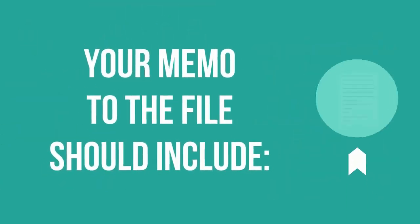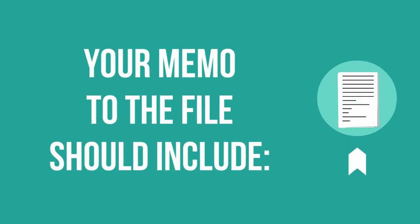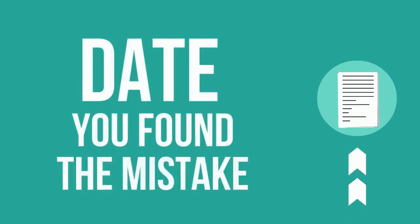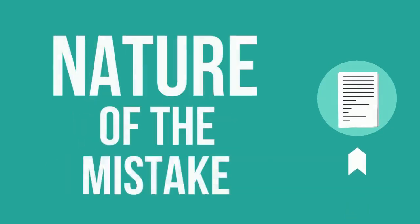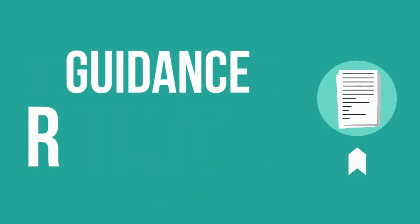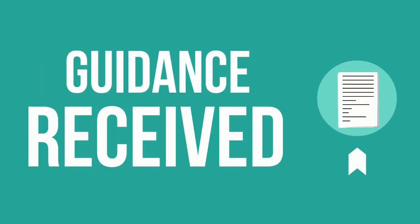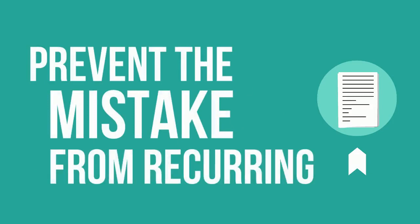Your memo to the file should include the date you found the mistake, the nature of the mistake, what you did to fix it, any guidance you received from a local HUD office or contract administrator about how to fix the mistake, and how you plan to prevent the mistake from recurring.